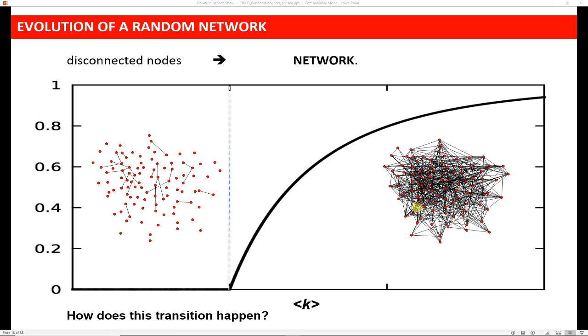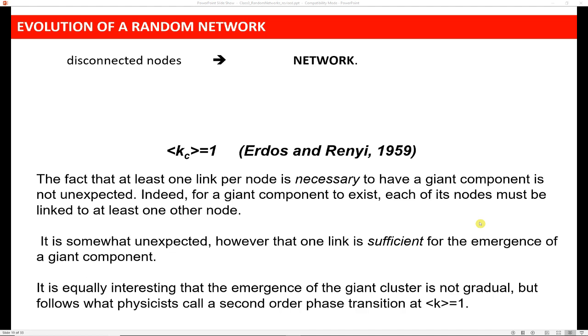So as a random network evolves, you get this giant component that kind of comes out of nowhere rather suddenly as you start to continue to add links. Now, the special thing about the giant component is that, by giant component I mean a component that's connected. So you have a bunch of nodes that are all connected to each other. So what this is saying here is that the fact that at least one link per node, the fact that that's necessary to have a giant component, that's not weird, right? Because if you have a connected component, you assume that each node at least has one link attached to it.